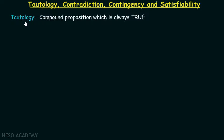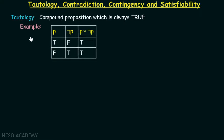Tautology is a compound proposition which is always true. Let's consider one example. Here I am considering one proposition called p. There are two possible truth values: true or false. Not p would be false and true respectively — whenever p is true, not p is false, and whenever p is false, not p is true. Now consider the compound proposition p OR NOT p. Since disjunction gives true whenever at least one value is true, the result is true for both combinations. Hence this compound proposition is always true, and therefore it is a tautology.